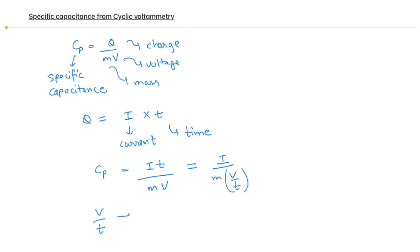V over t is voltage per time, also known as scan rate. We will apply this in the derivation. Okay, so now, replacing this V over t by k...